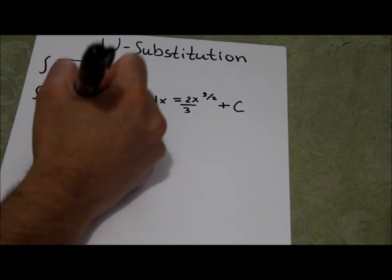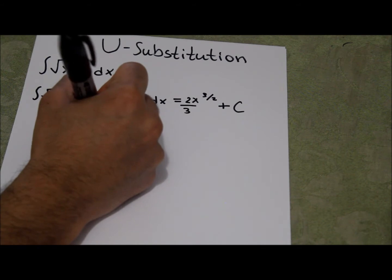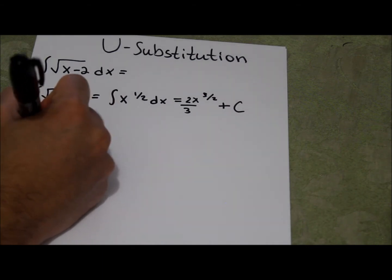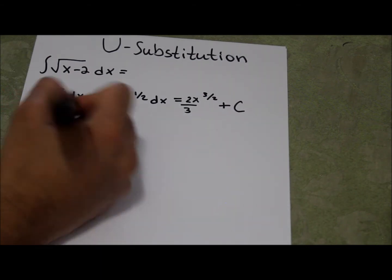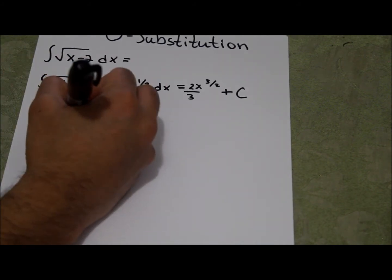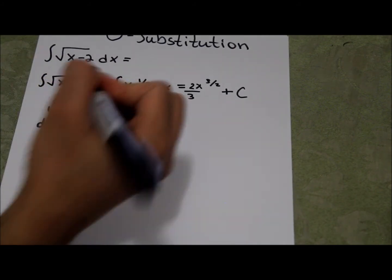So you set u equals x minus 2. And then you take the derivative of whatever this is. So derivative of u is du and the derivative of x is just 1, and the derivative of 2 which is a constant is just 0. So you get du equals dx.